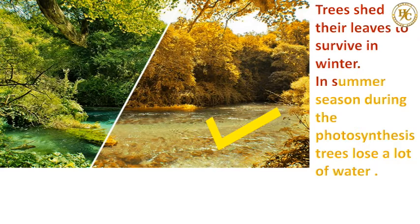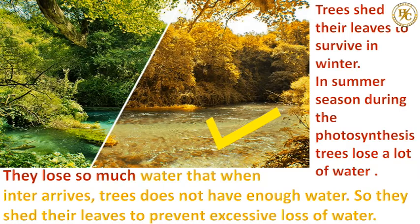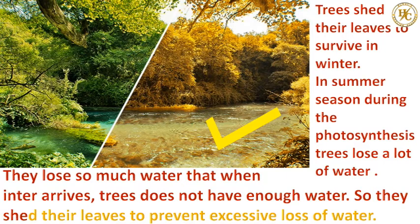In summer season, during the photosynthesis process, trees lose a lot of water. They lose so much water that when winter arrives, trees do not have enough water. So, they shed their leaves to prevent excessive loss of water.